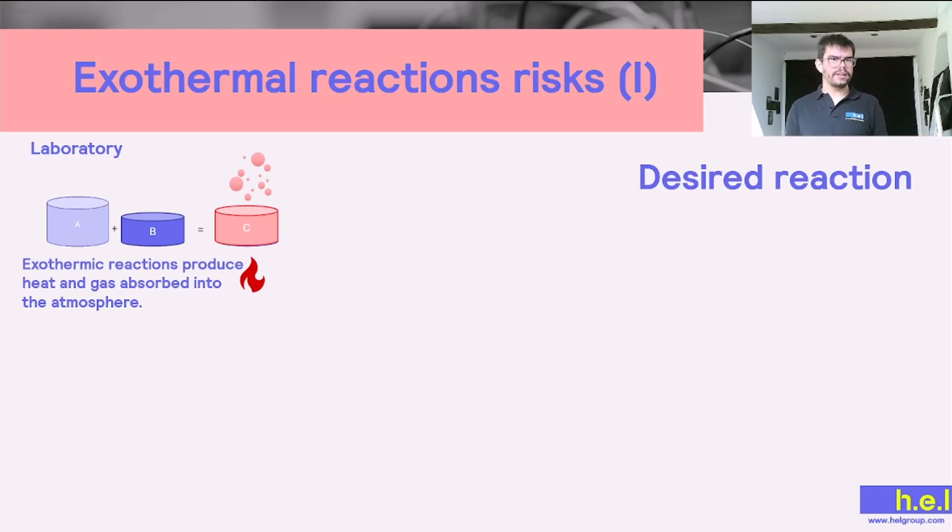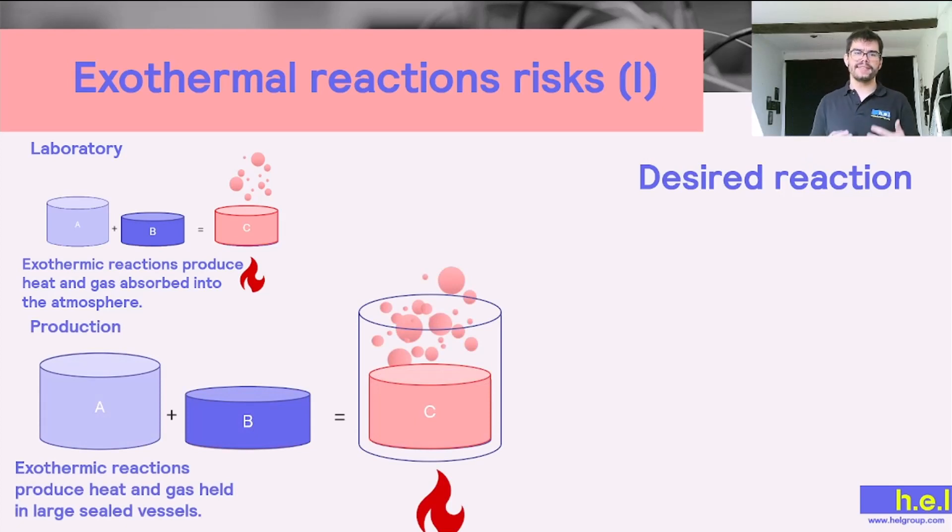This situation is going to change if we have industrial scale experiments in which we're not going to use milligrams or grams, we're going to use kilos and kilos of compound A and B, and instead of using an open vessel we are going to use sealed vessels. So we're going to have A and B that are going to be reacting with each other to generate C, and heat and gases are going to be produced. If we have very high heat accumulation, it can be the case that we have fire risks, and if we have over-pressuring of the system because of the accumulation of gas, it can result in the explosion of the vessel, which can be very dangerous.